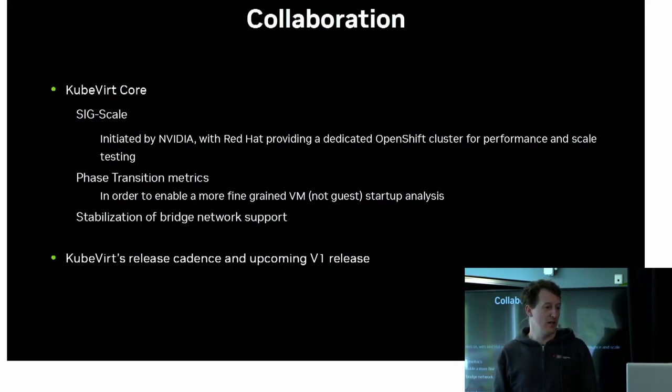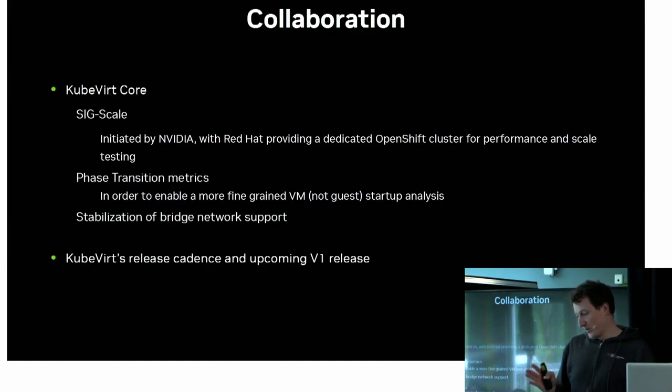We also had an opportunity to collaborate on the networking side. KubeVirt provides two mechanisms to connect your VM to a network. By default, a VM is connected to the pod network so it can speak to every pod on your control plane — you can control access using network policies, services, and ingress, everything you know. KubeVirt also supports attaching multiple interfaces using Multus. Our collaboration primarily focused on the pod network — making it efficient and ensuring low latency. There were some state problems with bridge networking for the pod network in KubeVirt, and that's where we added production-ready code.